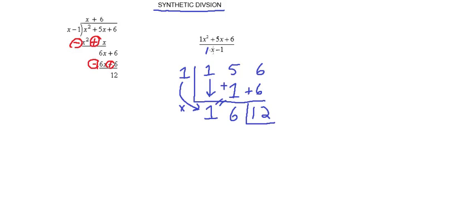Because we divided by x, each one of these terms is going to go down one in degrees. So this was the 1x squared term, this is just going to be the 1x term. This is the linear term, so the 6 is just going to become the constant term. And then as we already discussed, this is the constant term, so this will become the remainder. So we're going to put plus 12 over what we divided by, which is actually x minus 1.